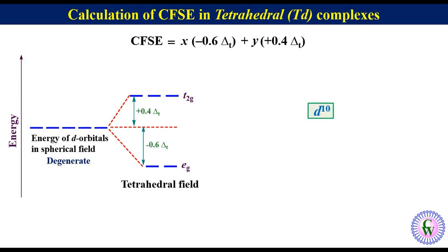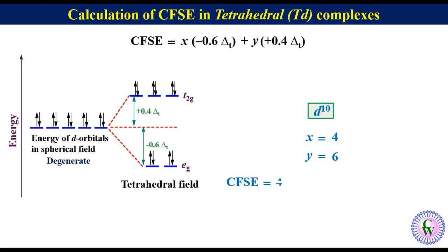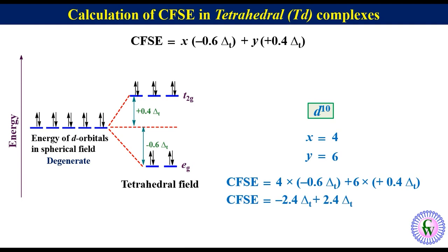In the case of D10 electrons in the metal ion, in a spherical field environment all 10 electrons will be here. In tetrahedral ligand environment, two electrons enter eg orbitals and three in t2g. So in D10 tetrahedral complex, x is equal to 4 and y is equal to 6. Thus CFSE will be equal to 4 into minus 0.6 delta-t plus 6 into plus 0.4 delta-t, giving minus 2.4 delta-t plus 2.4 delta-t. Thus CFSE will be equal to 0.